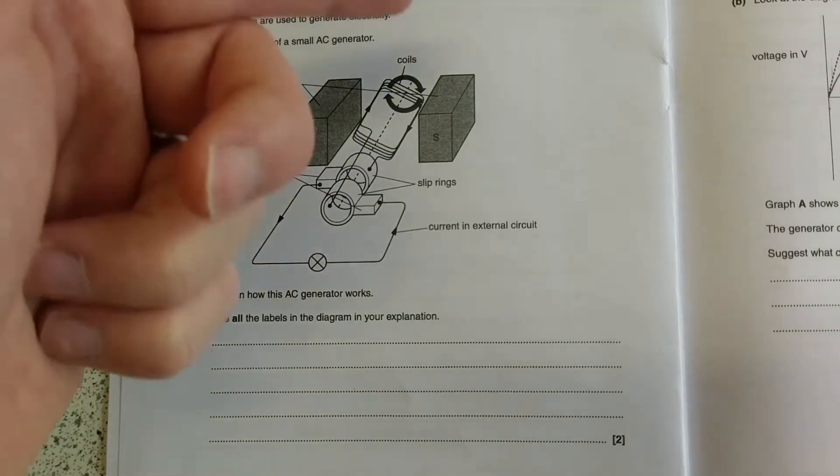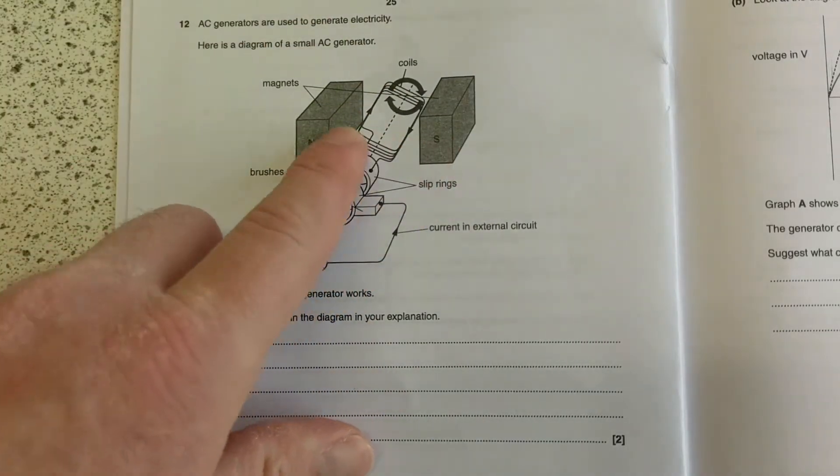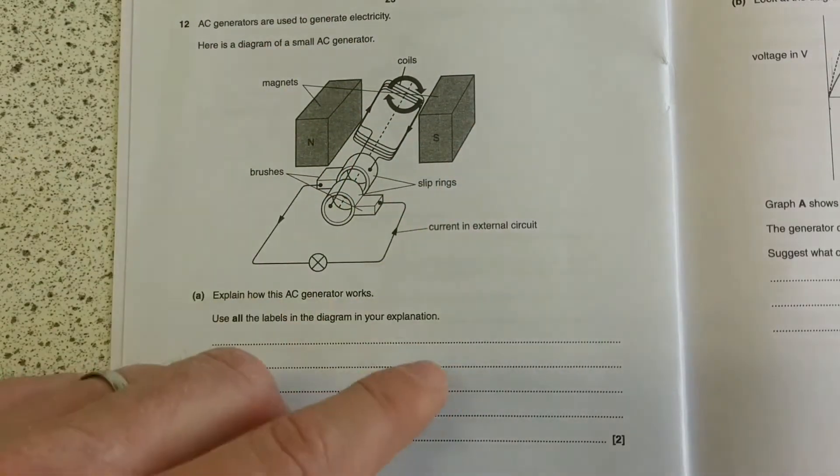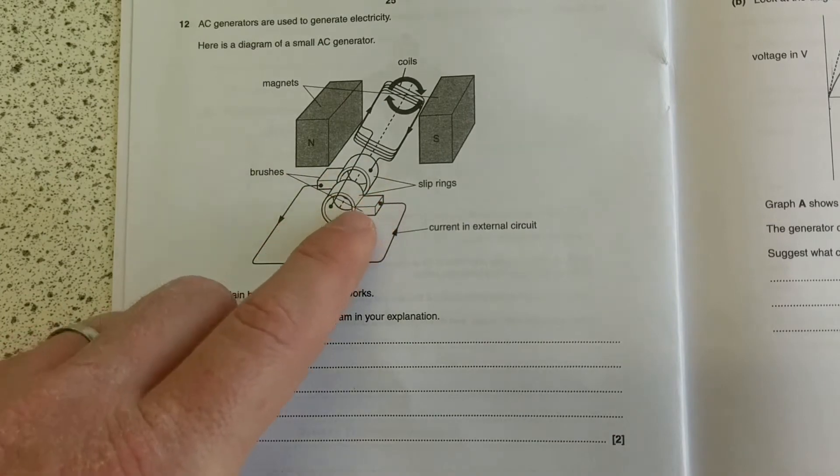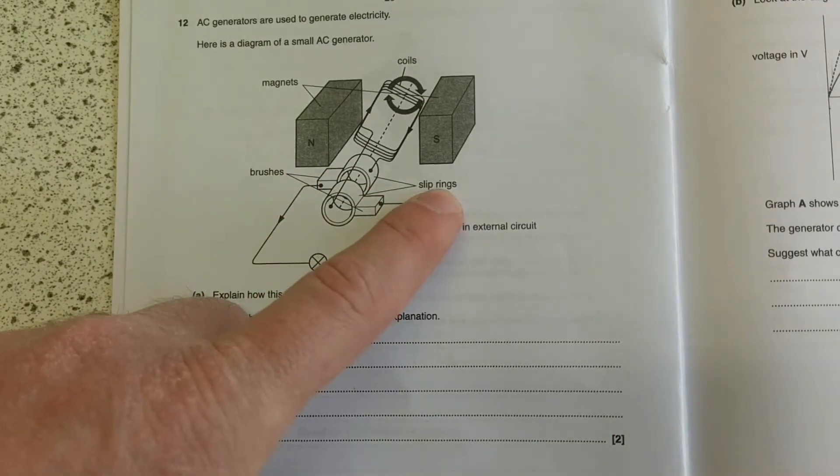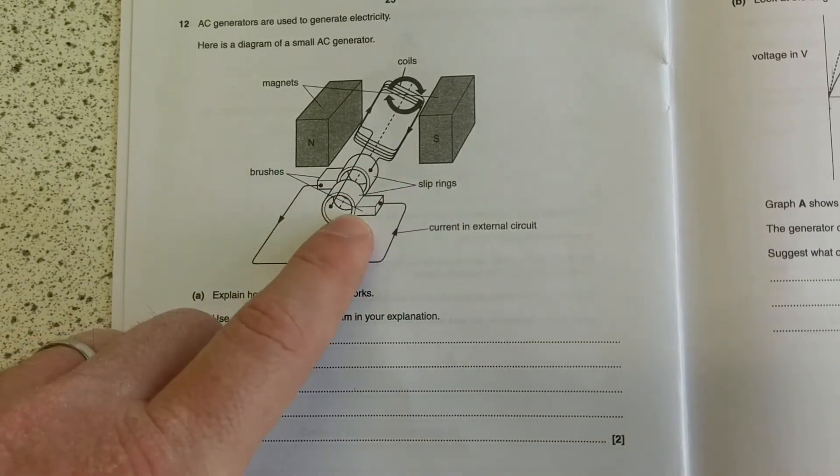So we needed to talk about the coil rotates in the magnetic field, creates a current in the coil, and the brushes and the slip rings. They provide a constant connection.